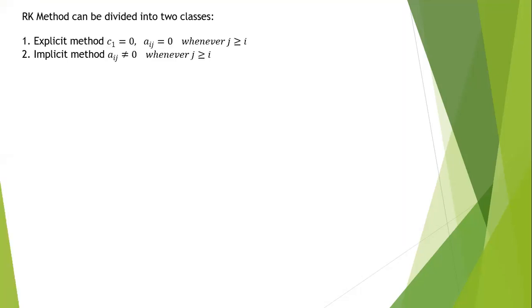The Runge-Kutta method can be divided into two classes: explicit and implicit. For the explicit method, c₁ equals 0 and a_ij equals 0 whenever j is greater than or equal to i. For the implicit method, a_ij is not equal to 0 whenever j is greater than or equal to i.